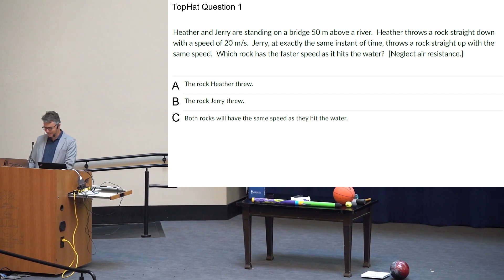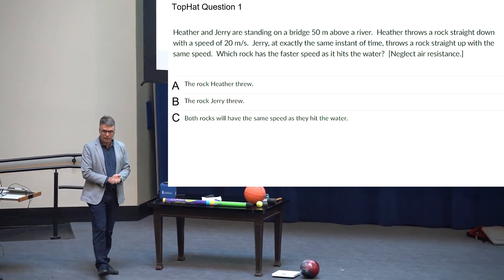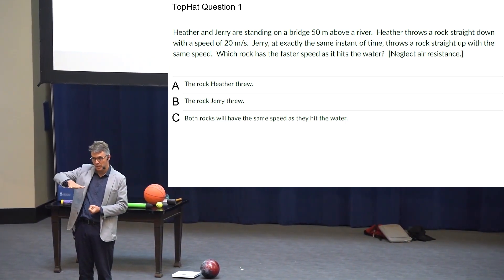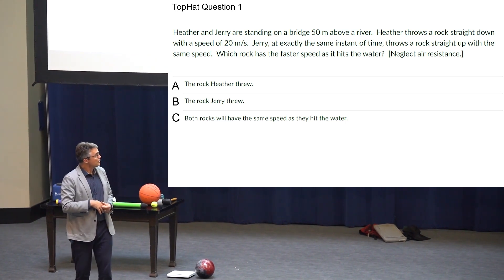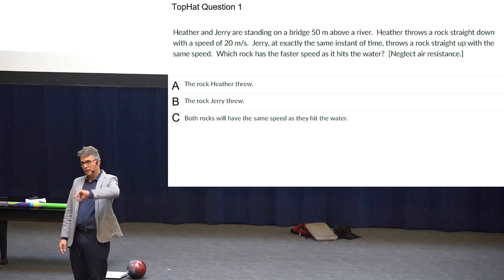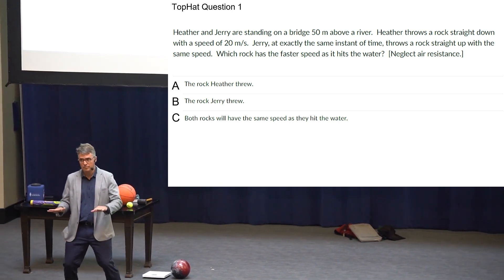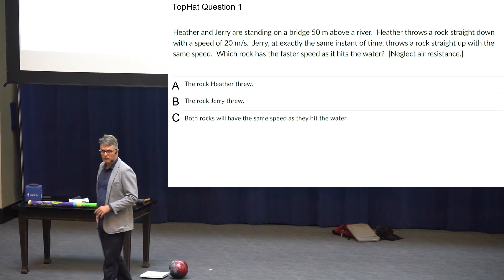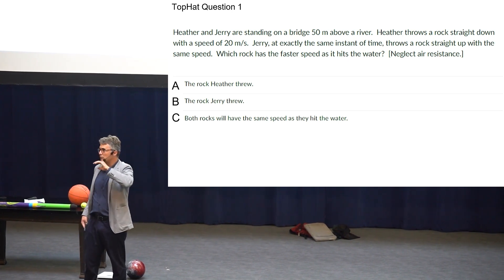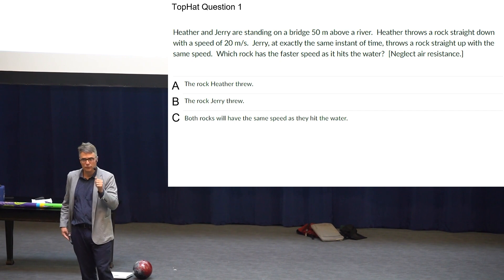Okay, everybody is doing alright. I was going to do this question on TopHat at the end of last class, but let's do it now. You've got two people standing on a bridge and they each have a rock. Heather throws the rock straight down with an initial speed of 20 meters per second and hits the water. Jerry, at the exact same instant of time, throws a similar rock straight up with 20 meters per second.